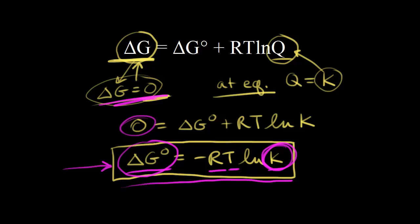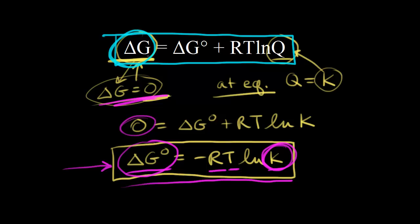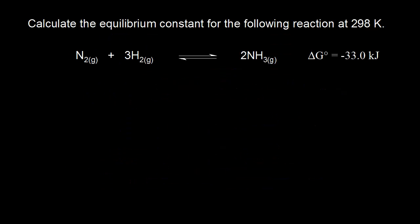Delta G zero becomes a guide to the ratio of products to reactants at equilibrium because it's related to the equilibrium constant K. If you're trying to find the spontaneity of a reaction, use the top equation and look at the sign of delta G. If you're trying to find the ratio of products to reactants at equilibrium, use the bottom equation relating delta G zero to K. Now we're ready to find some equilibrium constants. For a specific temperature, you have one equilibrium constant, and we'll find K for this reaction at 298 K.